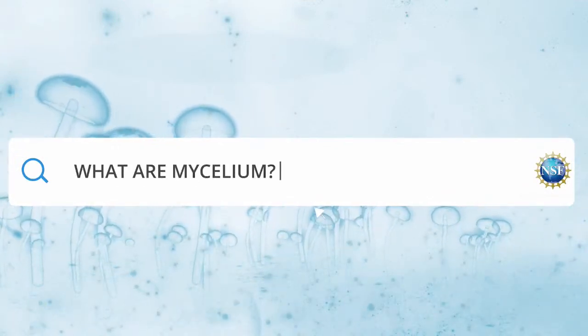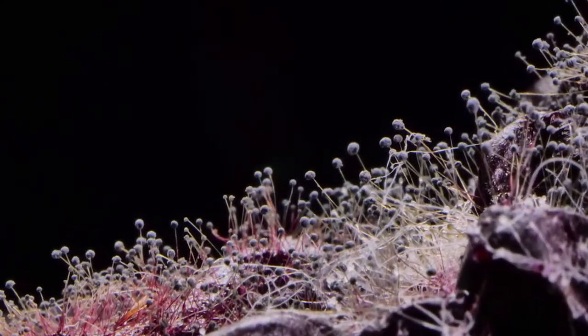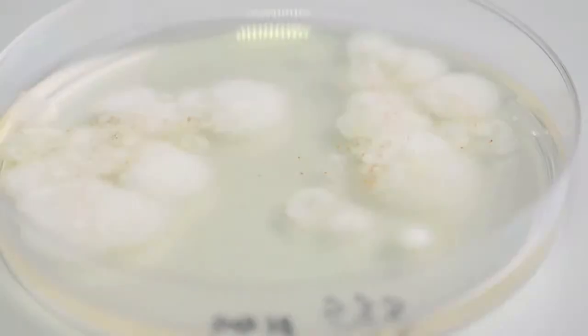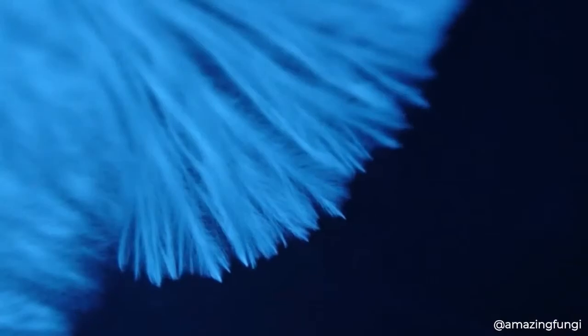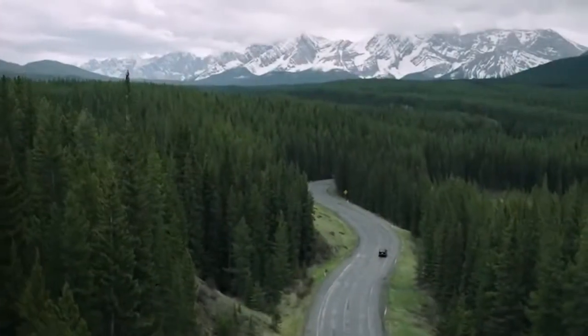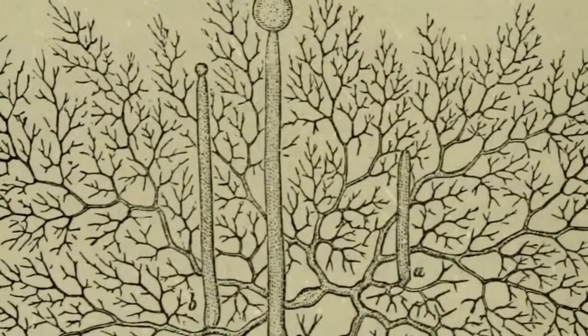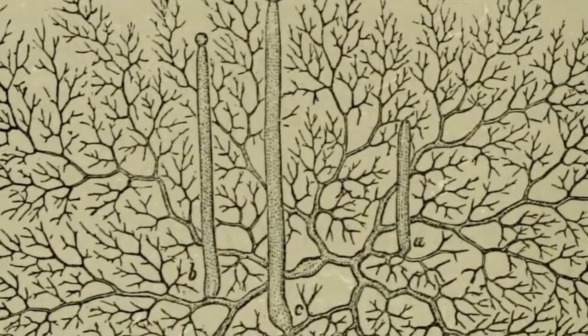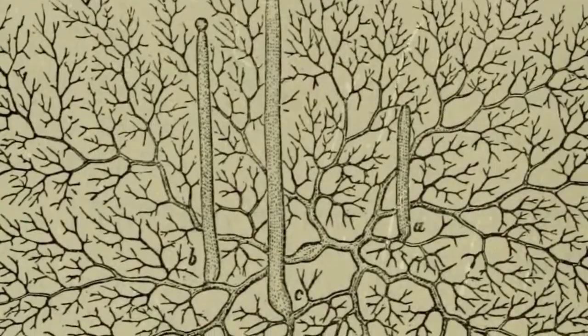The cells of a fungus are called hyphae, and these structures are like tubes. These tubes allow the fungus to colonize and to grow in different environments. When you have a number of hyphae together, that is what we call a mycelium — and this is the body of the fungus.